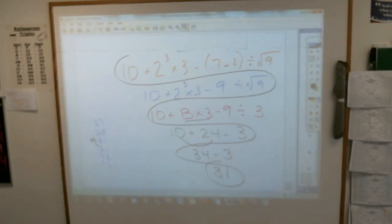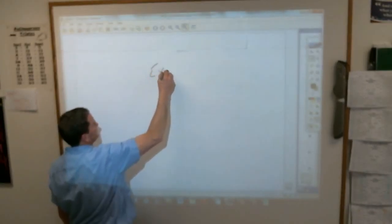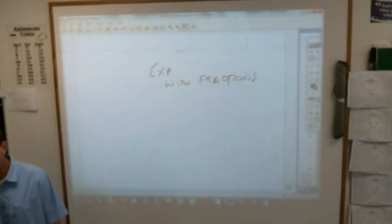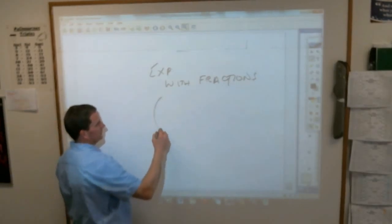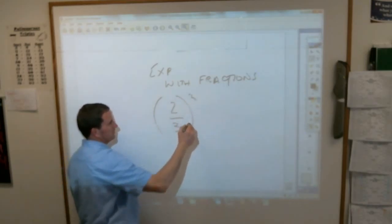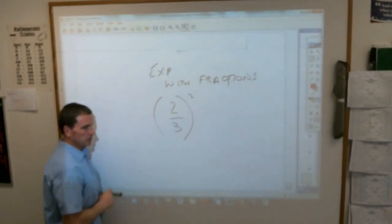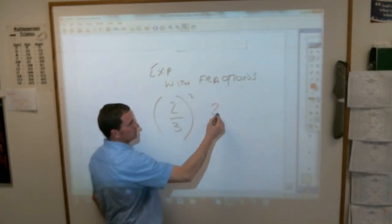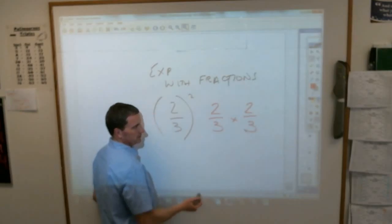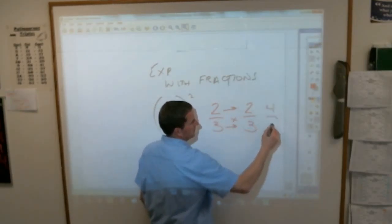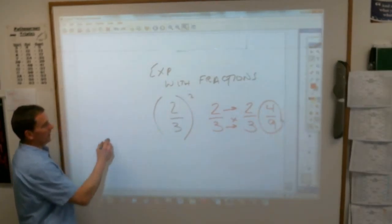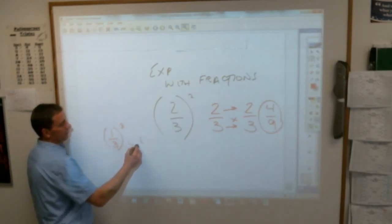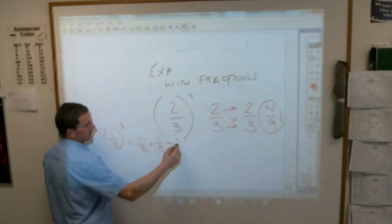And last, under your notes please put this. Exponents with fractions. The third thing about exponents. And it should not confuse you. But if you see this, you'll have to have the fraction in parentheses and an exponent to it. Don't let that confuse, scare, or frighten you. That just means 2 thirds squared means 2 thirds times 2 thirds. 2 thirds times itself. And it's easy to multiply fractions because you just multiply across and you get 4 ninths. Or if you have 1 third to the third power. That would be 1 third times 1 third times 1 third. 1 times 1 times 1 is 1. 3 times 3 times 3 is 27. So 1 over 27.